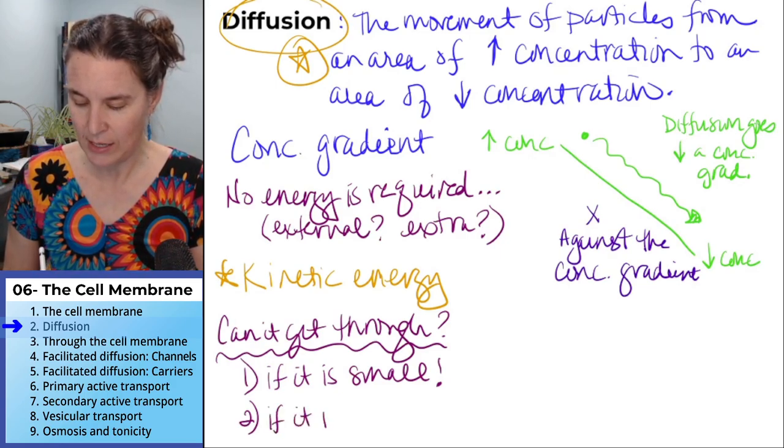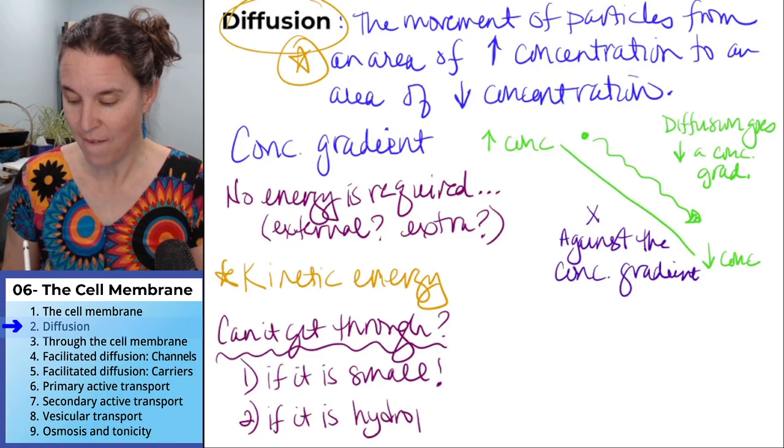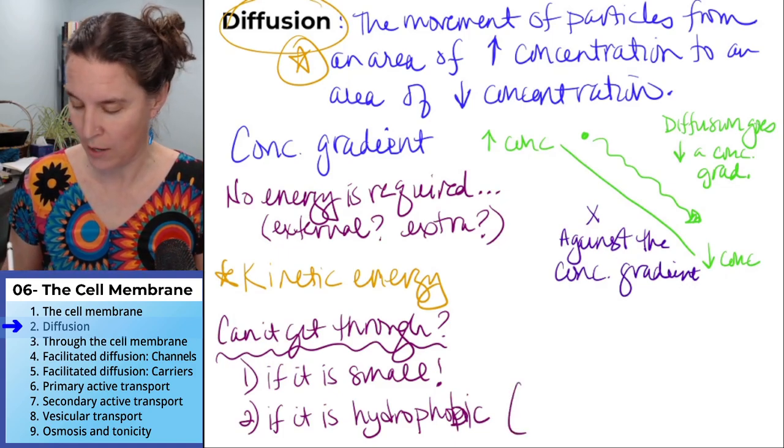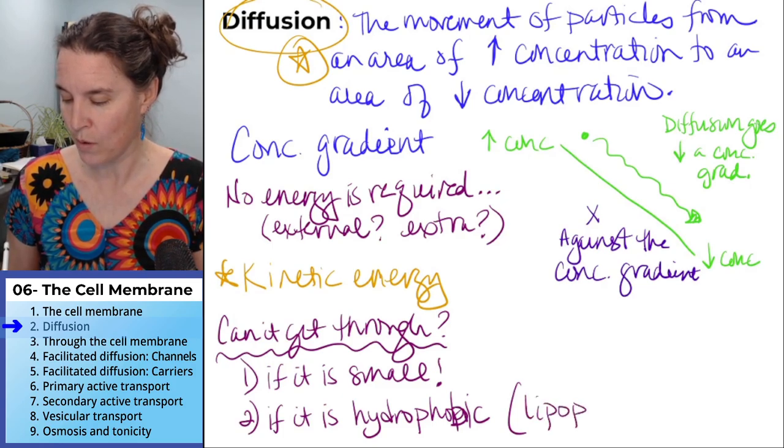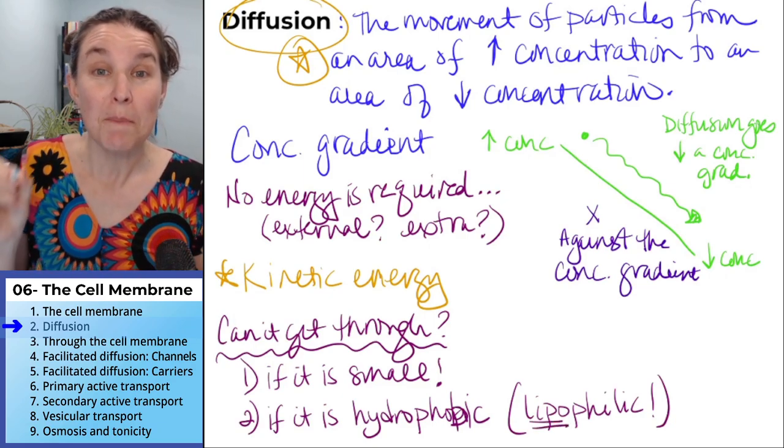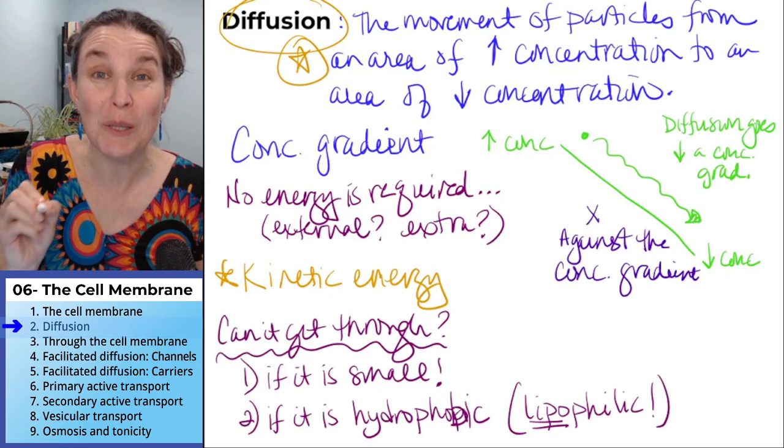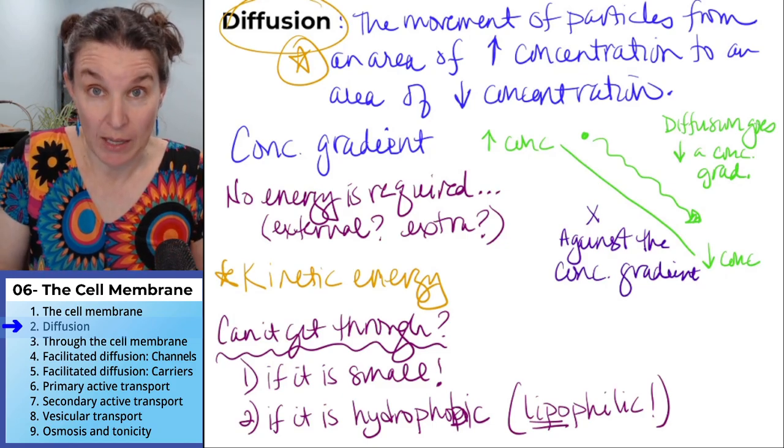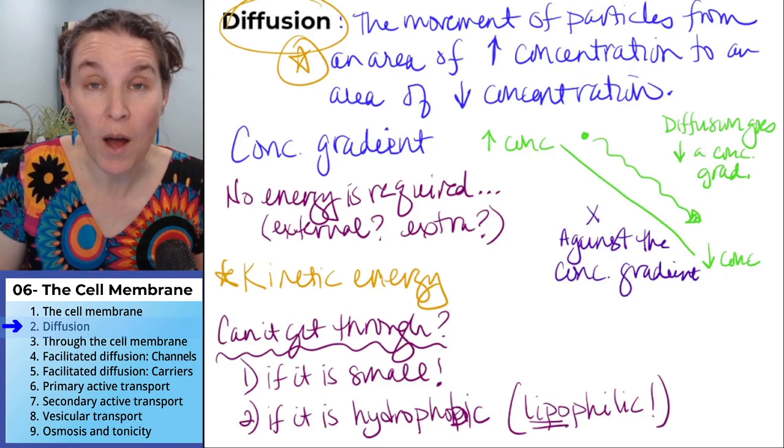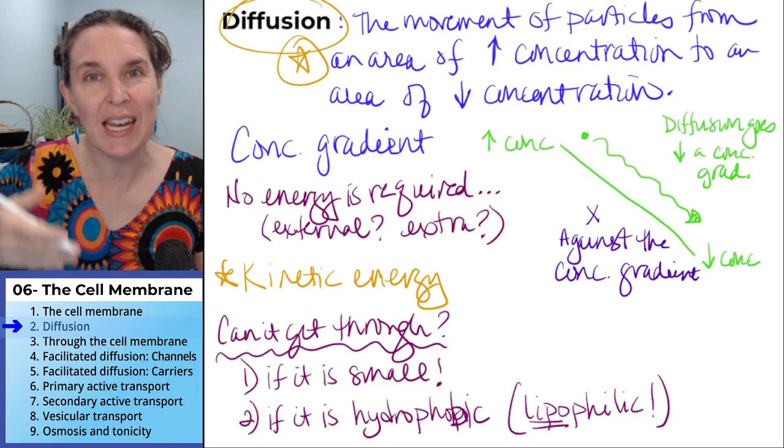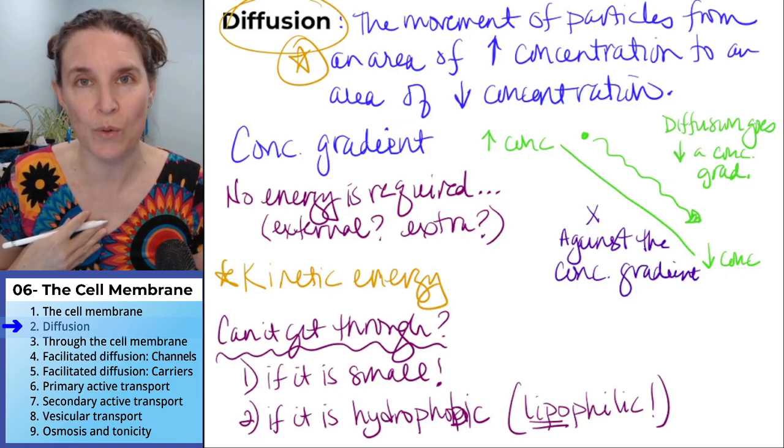If it's small, it can get through. And if it is hydrophobic. That's a B-I-C. Or another word that we can use to describe hydrophobic is lipophilic. Lipid-loving. Because of the phospholipid core of the cell membrane, if something is a lipid or it's hydrophobic, it doesn't like water, it can usually, sometimes, if it's not too huge, it can actually diffuse through the cell membrane.